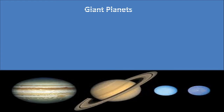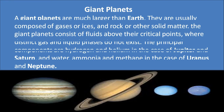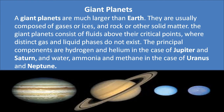These are the giant planets, also called gaseous planets. Giant planets are much bigger than the Earth and are usually made up of gases or ice. They also consist of fluid where distinct gas and liquid phases do not exist. The components present in Jupiter and Saturn are hydrogen and helium, while water, ammonia, and methane are present in Uranus and Neptune.